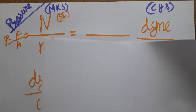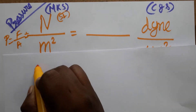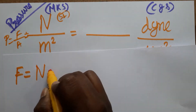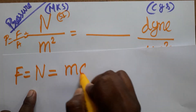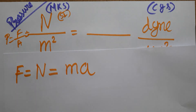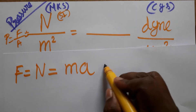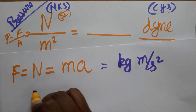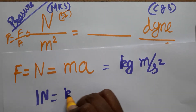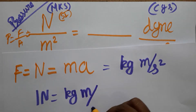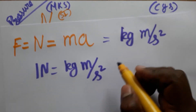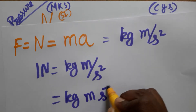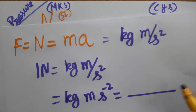First we will take Newton. Newton is a force unit. Force we can take as mass into acceleration. Mass unit is kg, acceleration unit is meter per second square. So one Newton is equal to kg·m/s², which we can write as kg·m·s⁻².